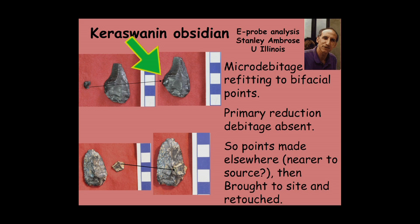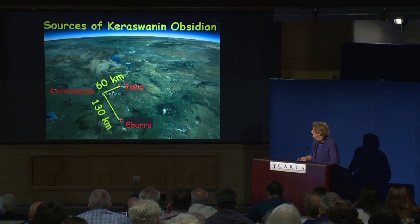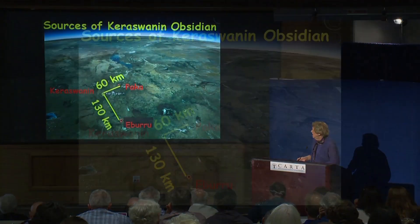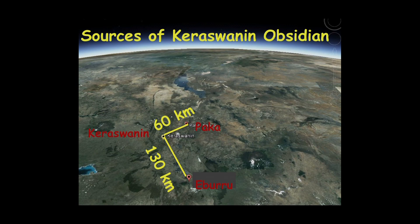There were little chips that fit back onto the points, and Ambrose was able to take those chips and figure out where the source was. The basic point may have been shaped elsewhere and then refined or finished at the site. Where is elsewhere? At least a couple of sources, one of which is 130 kilometers away — so again, very long distances that this material is traveling.